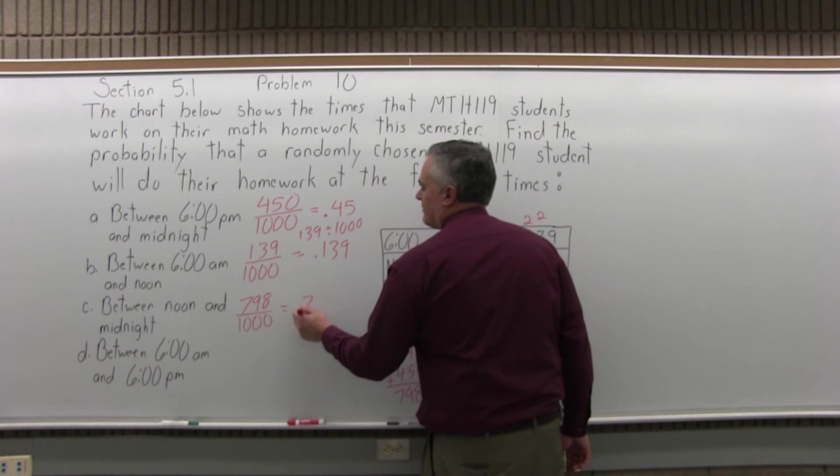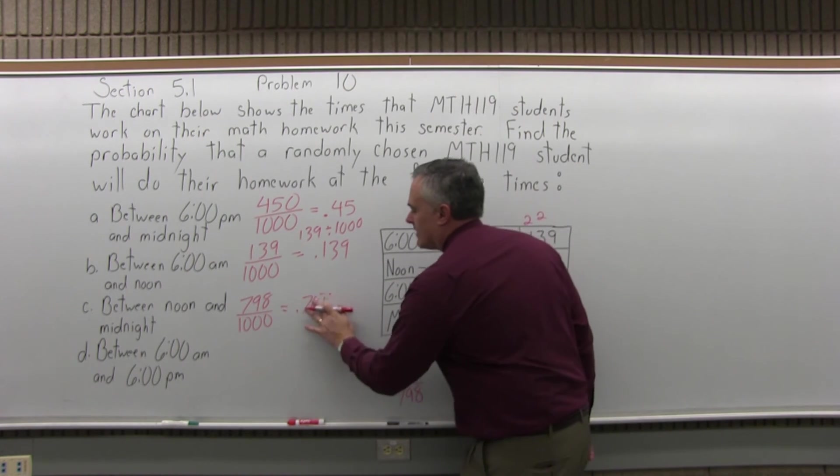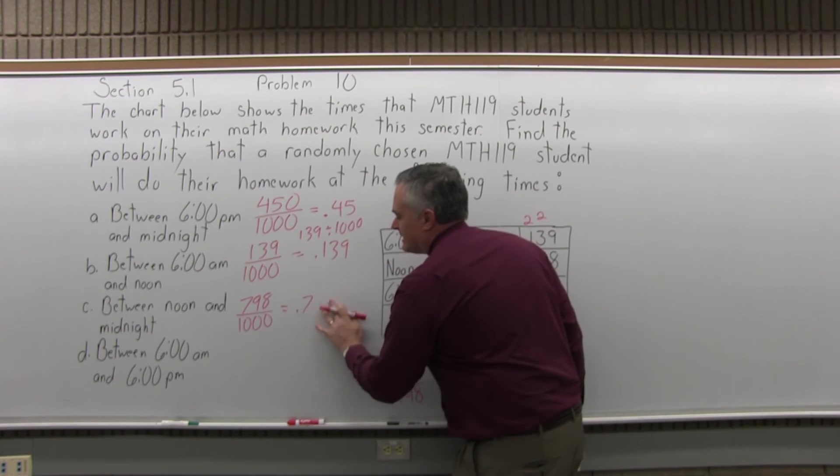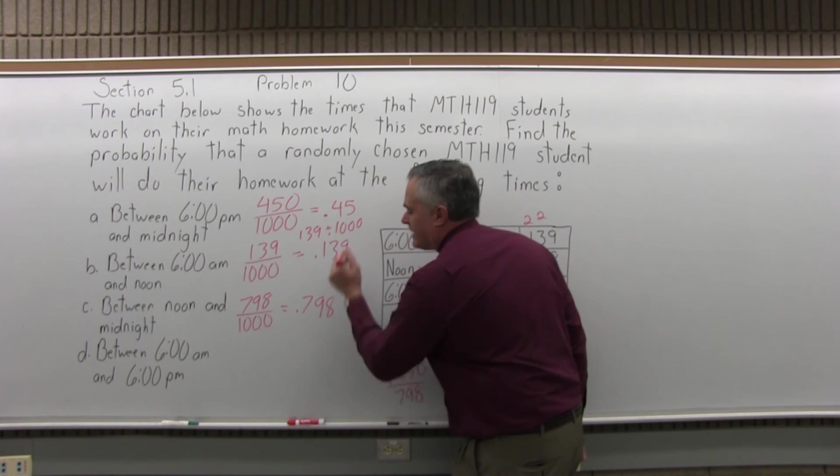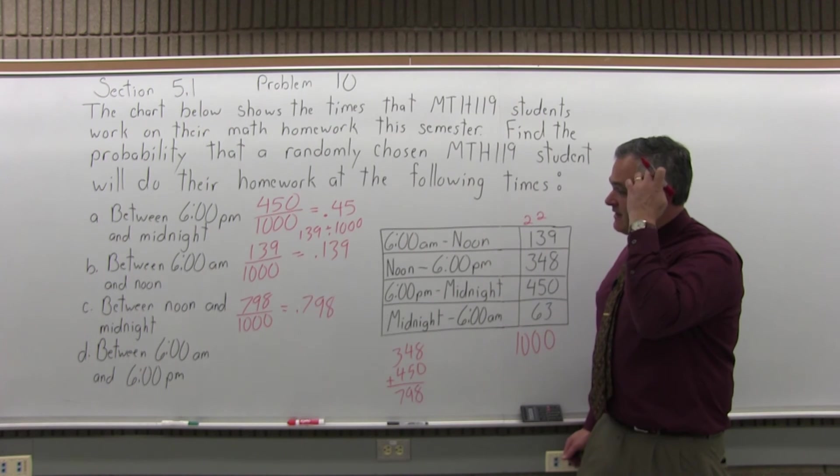Again, it can be converted to a decimal very easily as .798, or almost 80% if you like percents better. And finally, the last one between 6 a.m. and 6 p.m.